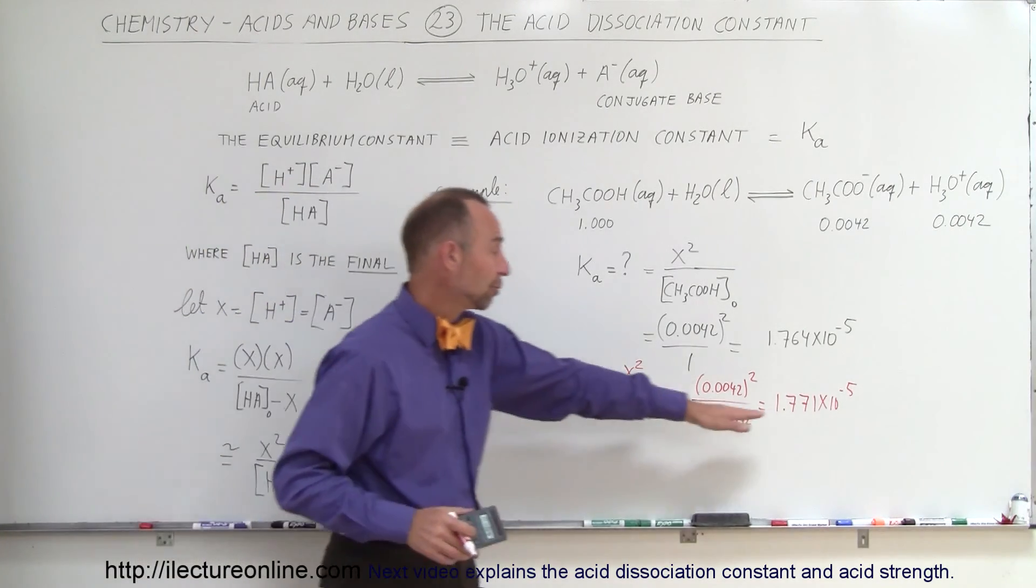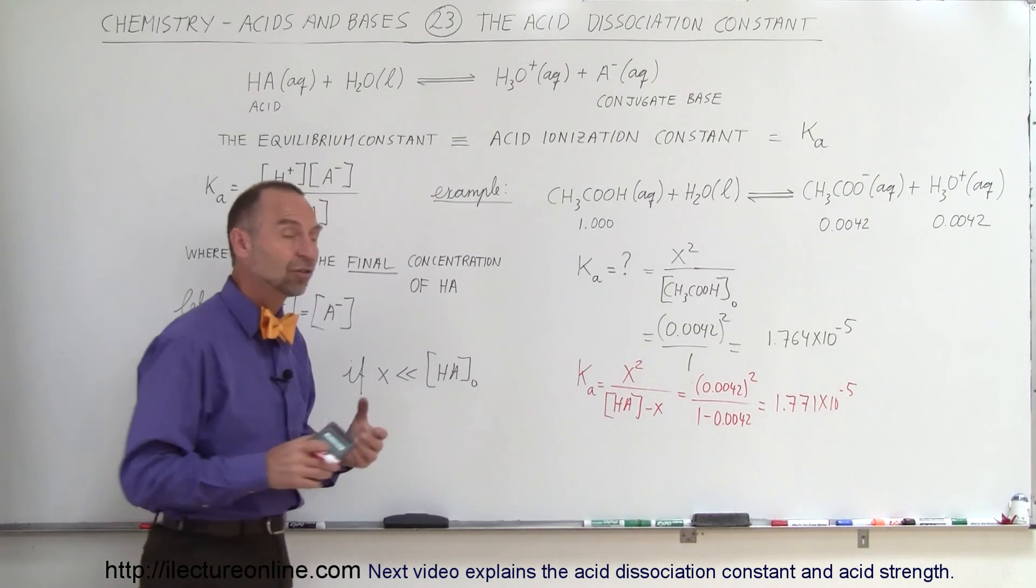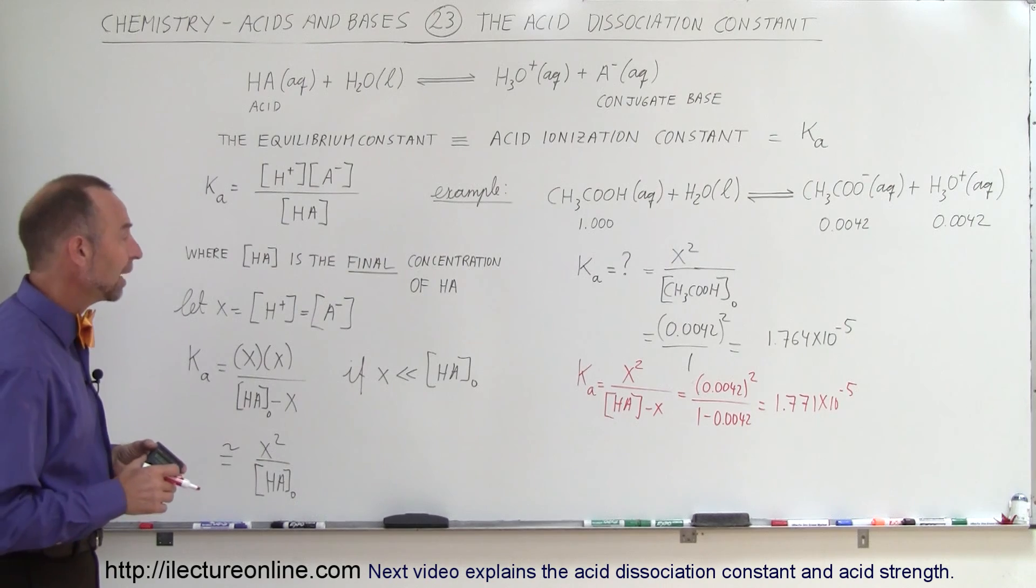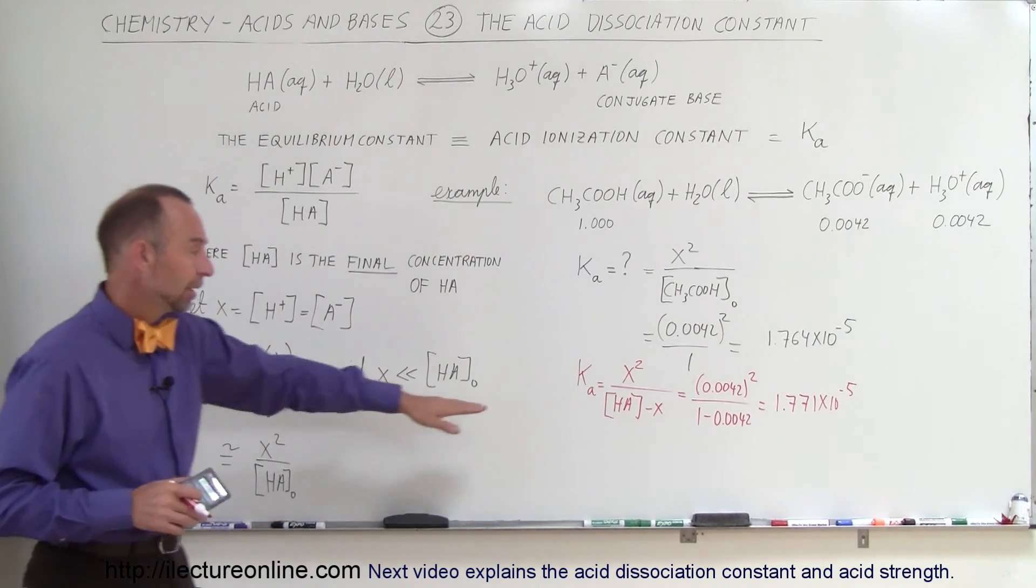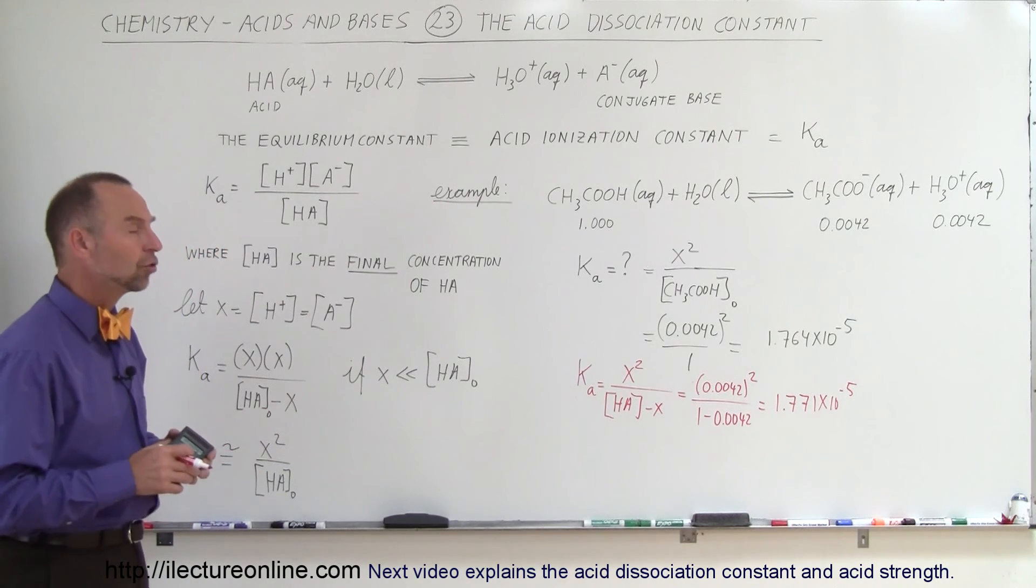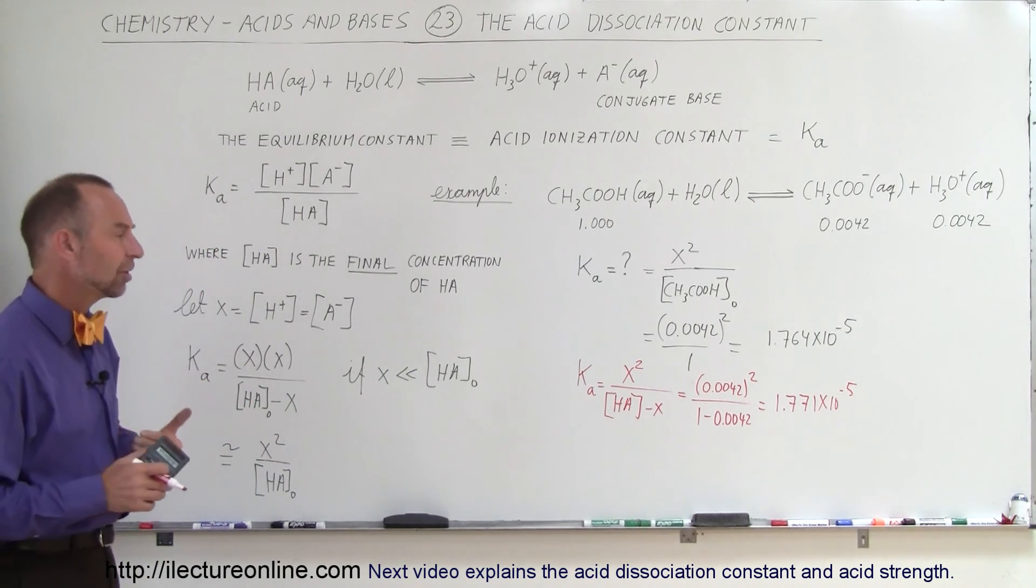Notice, when the constant is a very small number, a very small percentage of the acid actually dissociates into its hydrogen ion and the conjugate base. And if the K is a large number, then a larger percentage of it dissociates. So K is also an indication of how weak or how strong the acid is.